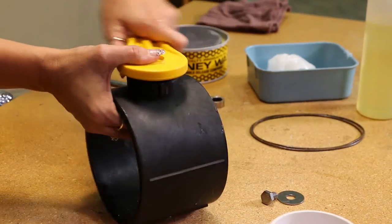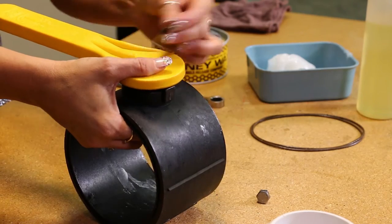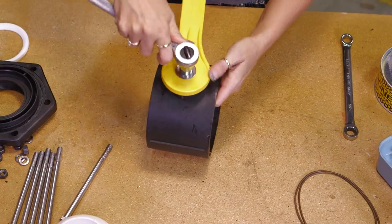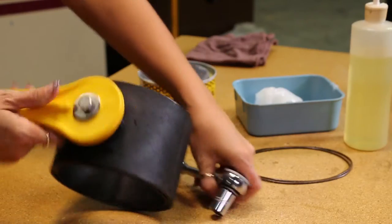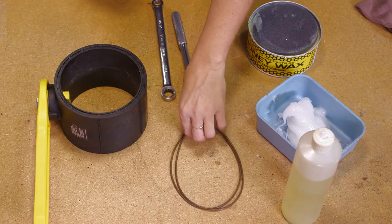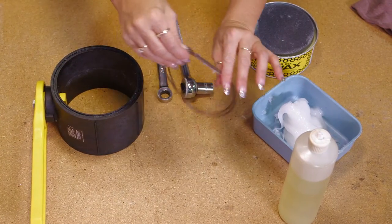Replace the handle back onto valve. Install body o-rings after lubricating with FDA grease.